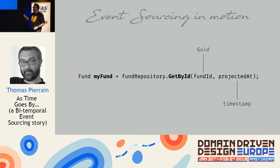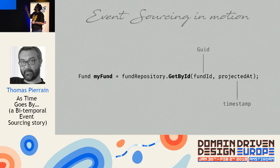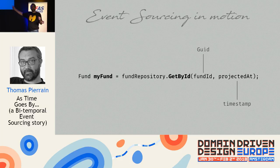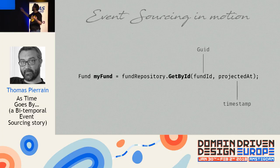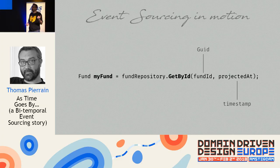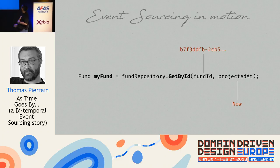I drew some pictures — what is an aggregate, command, events — to explain to the team, because there were mostly IT guys and one domain expert in the room, plus Bruno and me. I showed a fund repository: please get me the fund at a given projection date, which is now. A fund is a simple object — it has an ID, name, creation date, management company, and shares.